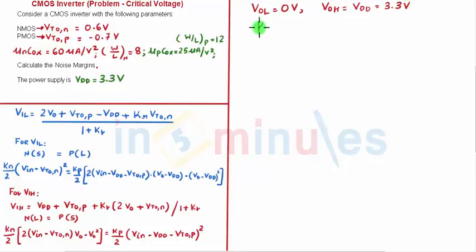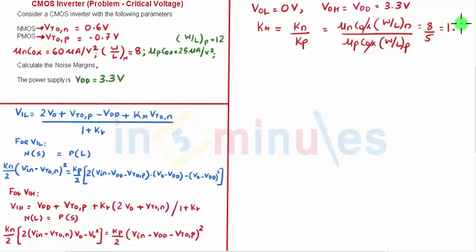First let's see whether it's a symmetric inverter or not. So KR equal to KN by KP where KN is nothing but Mu NCOx W by L of NMOS and KP is Mu PCOx W by L of PMOS. KR equal to 8 by 5 which is equal to 1.6. That means it's not a symmetric inverter. We also see that the threshold voltage of NMOS and PMOS are also not same. So we draw conclusion that it's not a symmetric inverter.